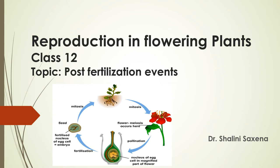Children, I hope all of you are doing well. Today we are here with another topic that is post-fertilization events. Before this, we are done with the pre-fertilization events and fertilization events. In that, we got to know there is a formation of gametes by the process of microsporogenesis and megasporogenesis. After that, there was a transfer that we call pollination, and when the pollination is done there is a process of fertilization. All these things we covered in the previous video.